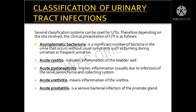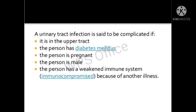Acute pyelonephritis implies inflammation of the renal parenchyma and the collecting system — it is inflammation of the kidneys or the upper urinary system. Acute urethritis means inflammation of the urethra. Acute prostatitis is a serious infection of the prostate gland. These are the five main classifications according to clinical presentation.